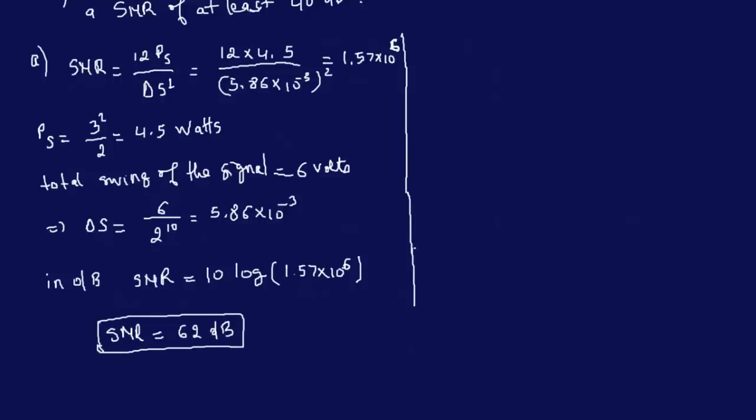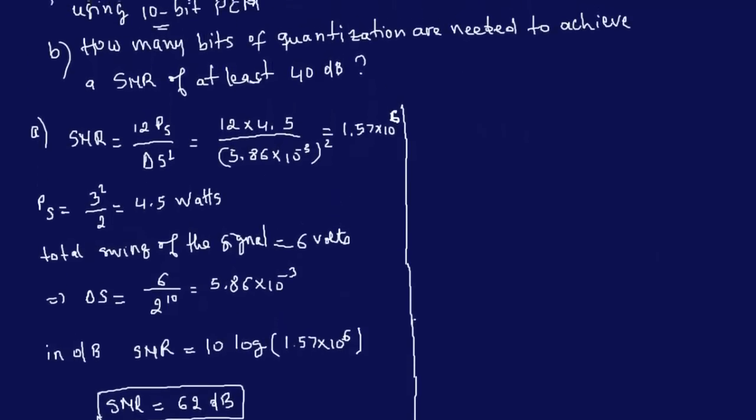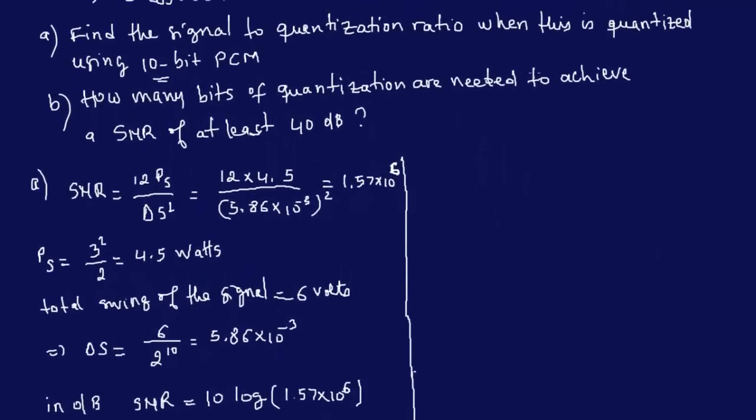So it's always good to actually convert this in decibels depending on the question of course, but typically SNR is actually in decibels. Now the second question, how many bits? So here the minimum signal to noise ratio is specified as 40 decibels.